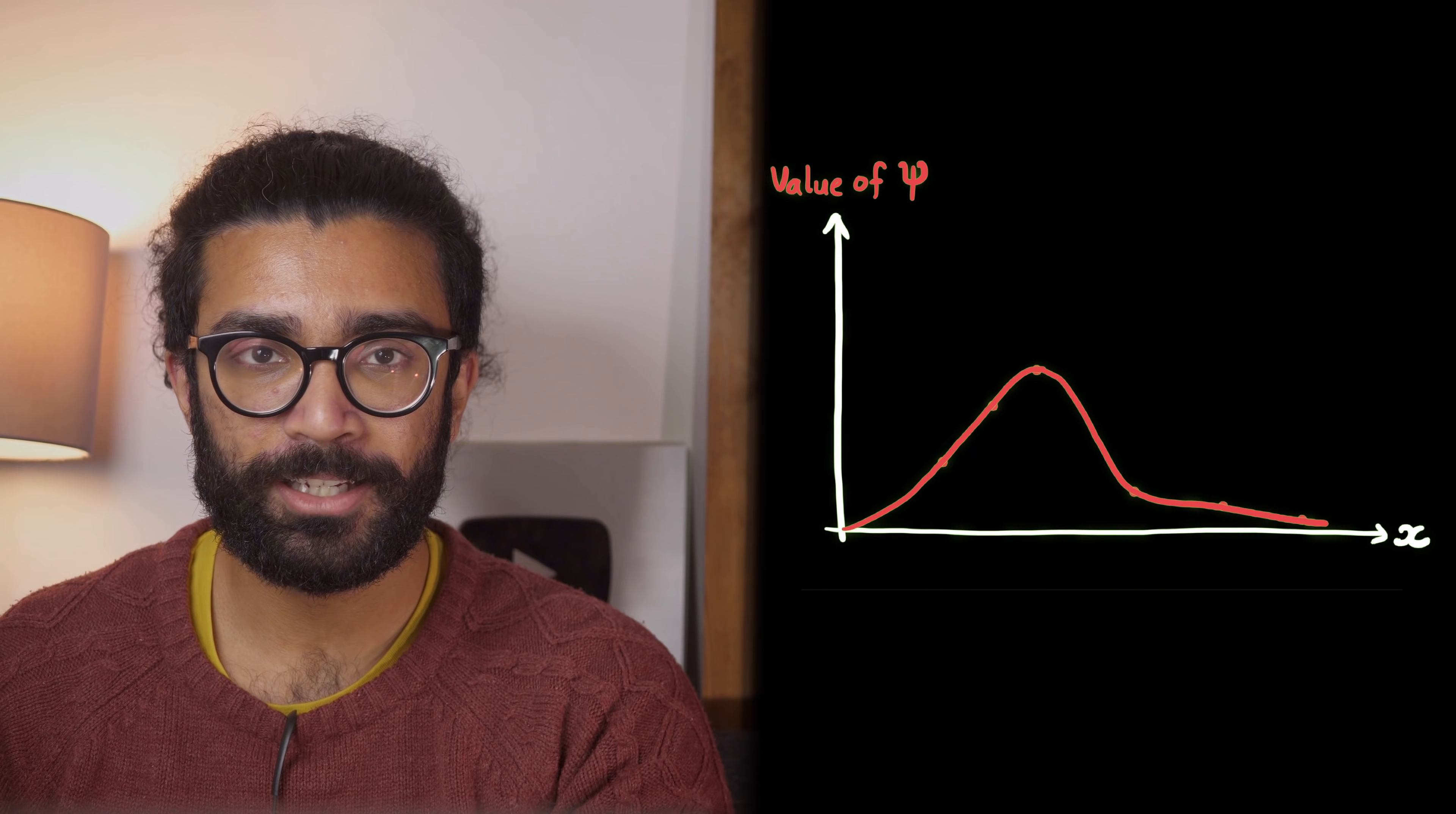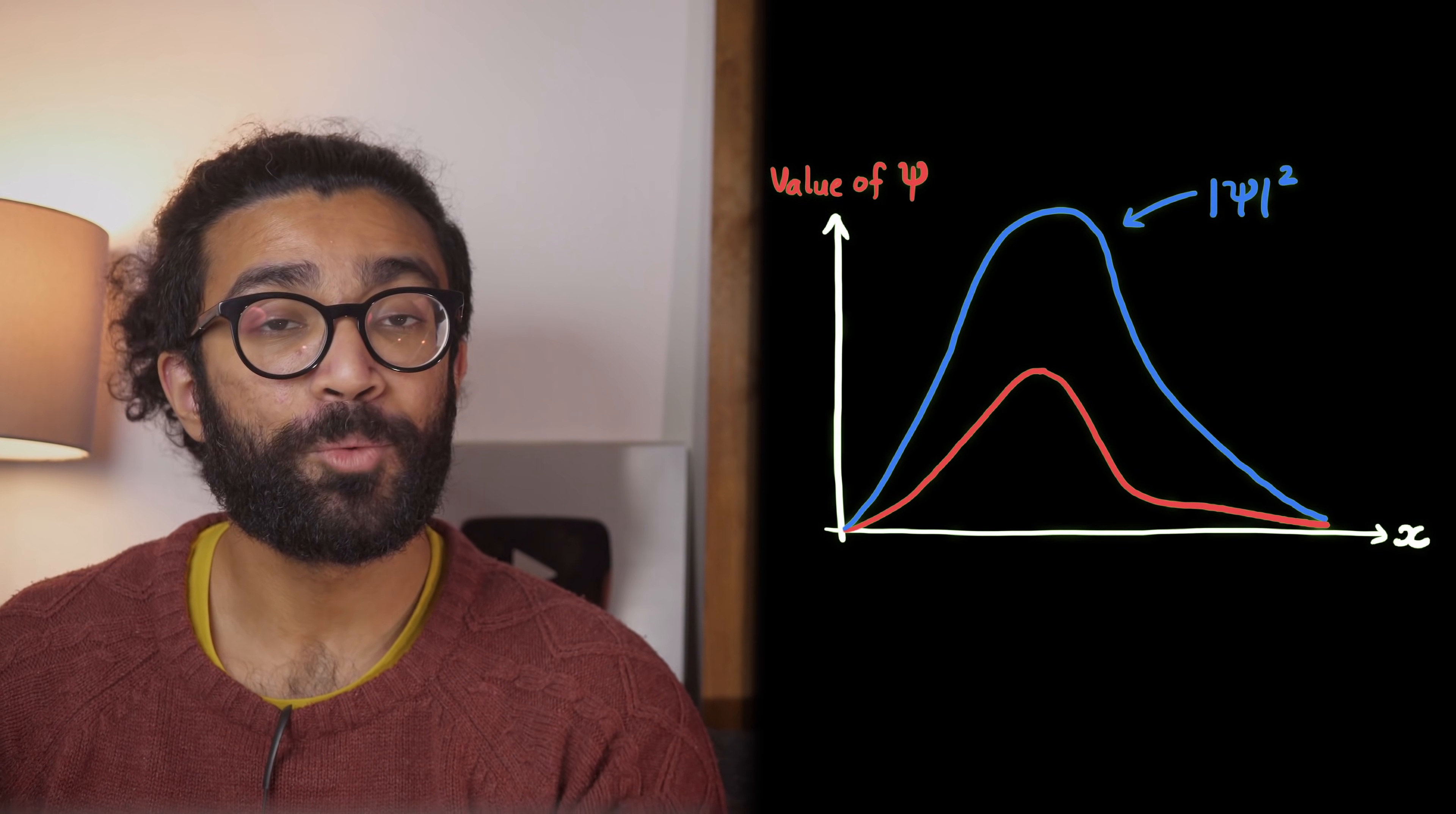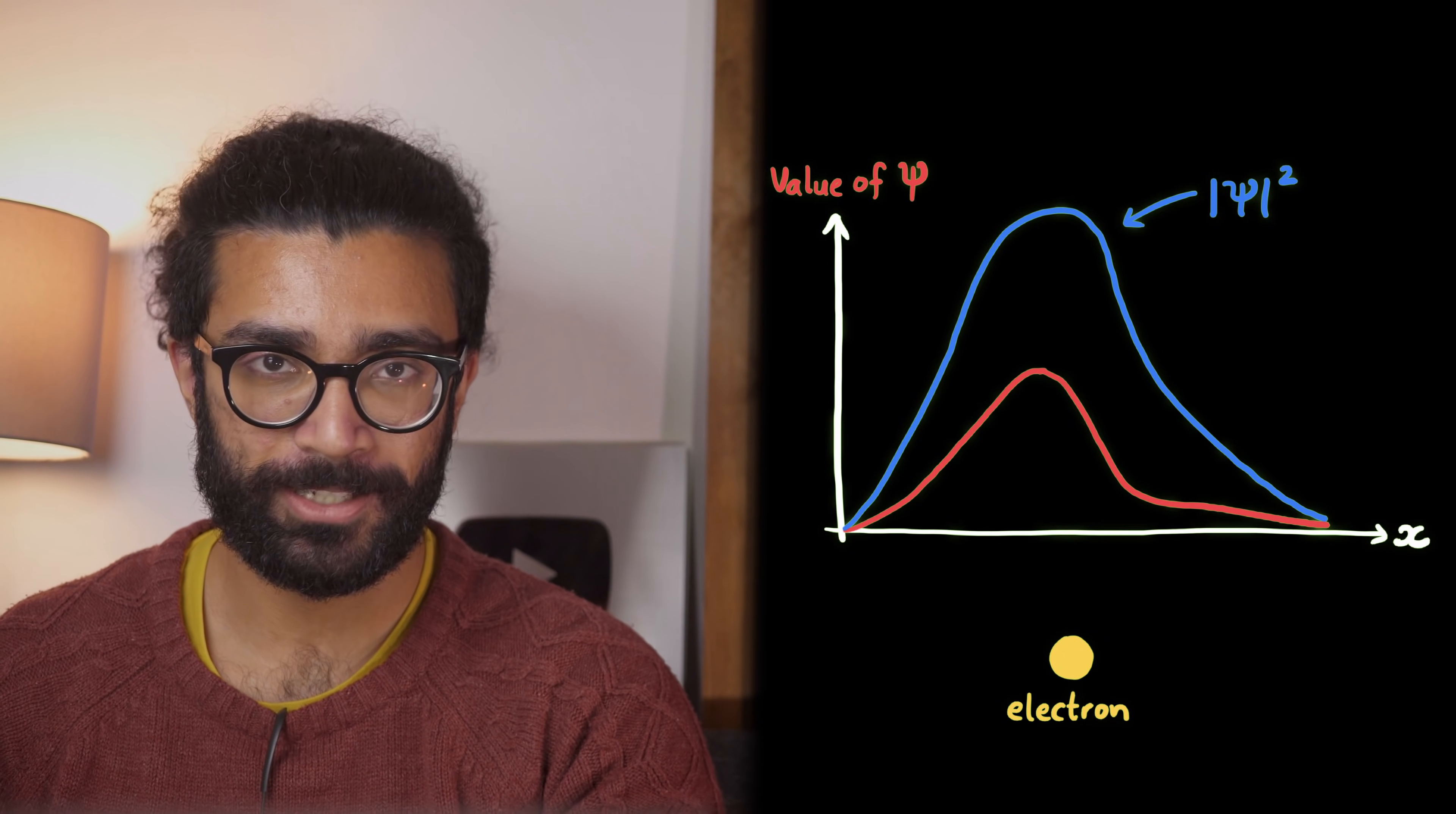But how does this continuous line correspond to our system? Well, this is how. If we take our wave function and we square it, technically we take its square modulus, then what we find is a probability distribution, or in other words, the likelihood of finding something out about the electron when we make a measurement on it.